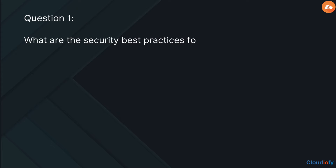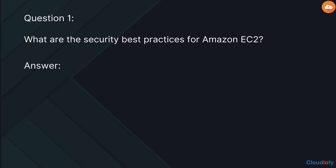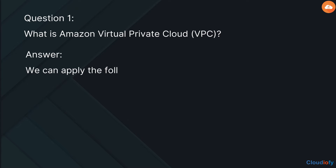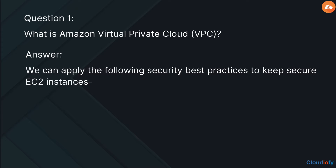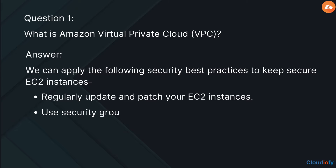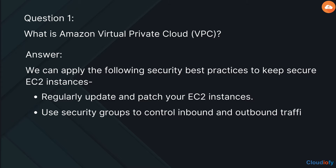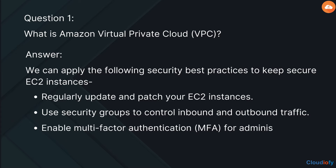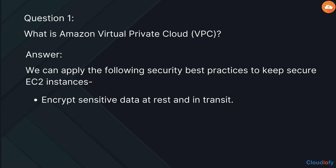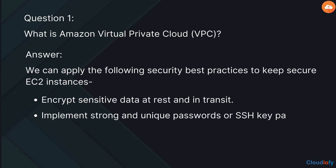The first question is: what are the security best practices for Amazon EC2? We can apply the following security best practices to keep EC2 instances secure. Regularly update and patch your EC2 instances. Use security groups to control inbound and outbound traffic. Enable multi-factor authentication (MFA) for administrative access. Encrypt sensitive data at rest and in transit.